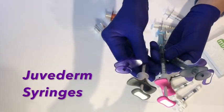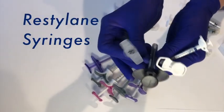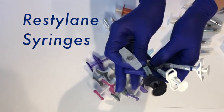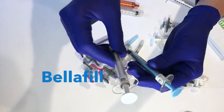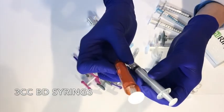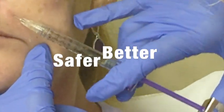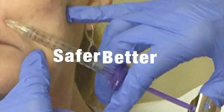Myring can be used with Juvederm syringes, both old and new, Restylane syringes, Mertz, Radius, Belotero, Versa, Belafil, and even 3cc BD syringes. Become a safer and better injector with Myring.